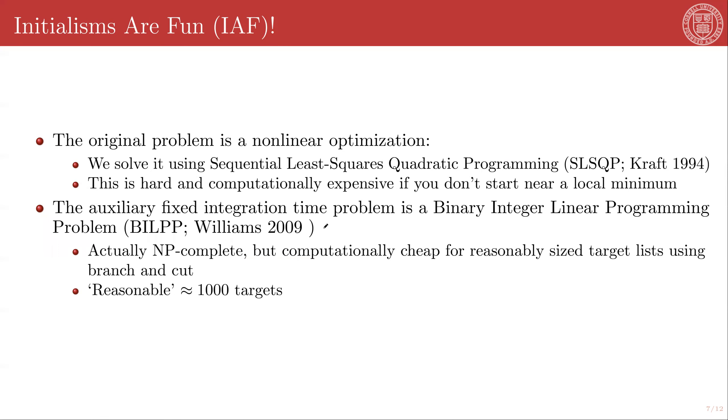As I said, the auxiliary problem is a binary integer linear programming problem or BILP and the full non-linear problem is a non-linear optimization that we are going to solve using sequential least squares quadratic programming or SLSQP. These are incredibly well understood problem classes, even though there's lots of active research in the efficient solution of each of these.